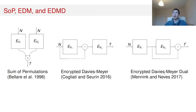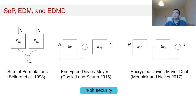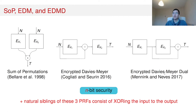The only constructions we can build with two block cipher calls are the sum of permutations construction by Bellale et al. in 1998, the Encrypted Davies-Meyer construction by Cogliati and Zhandry in 2016, and the Encrypted Davies-Meyer construction by Mandal and Navis in 2017. These construction strategies are already known from previous work and are shown to achieve beyond-birthday-bound security. Besides those constructions, their natural dual variants, obtained by XORing the input to the output, also achieve the same amount of security.